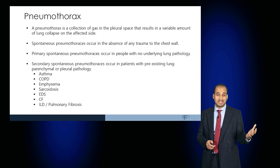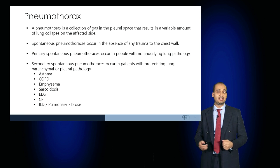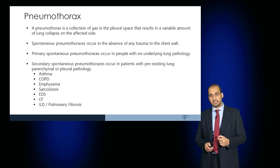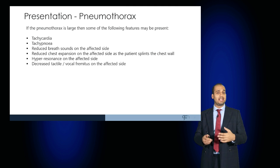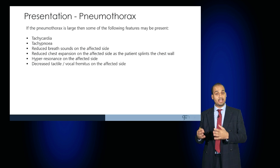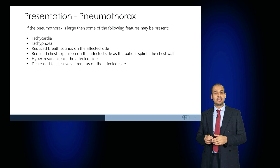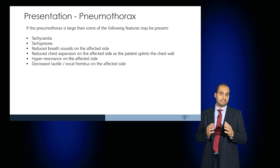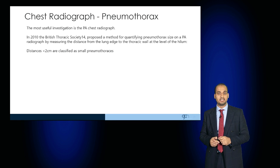Conditions associated with secondary pneumothorax include asthma, COPD, emphysema, sarcoid, Ehlers-Danlos, cystic fibrosis, or any other respiratory condition. Patients would present with chest pain, be tachycardic, tachypnoeic, have reduced breath sounds on the affected side, reduced chest expansion and hyper-resonance on the affected side, and tactile resonance and vocal fremitus would be reduced on the affected side.